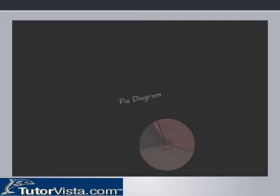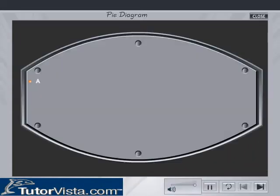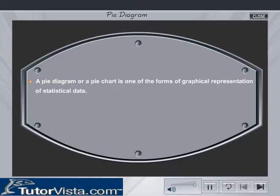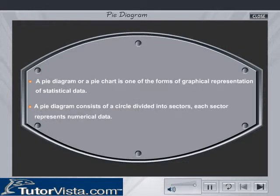Pie Diagram. A pie diagram or a pie chart is one of the forms of graphical representation of statistical data. A pie diagram consists of a circle divided into sectors. Each sector represents numerical data.